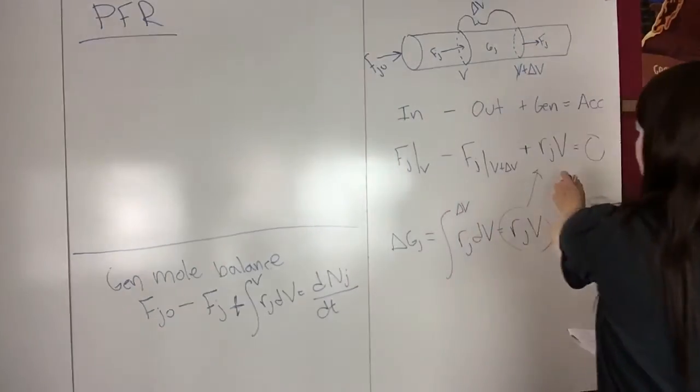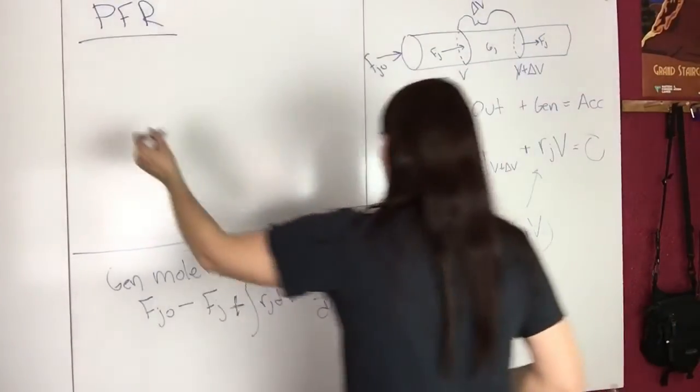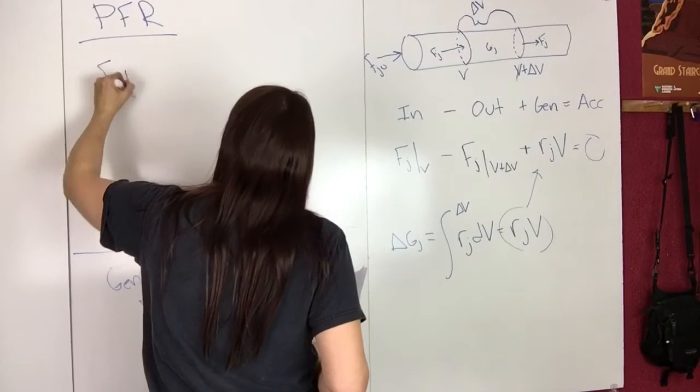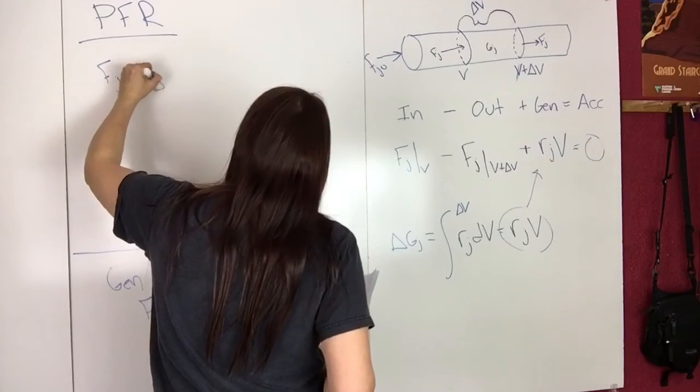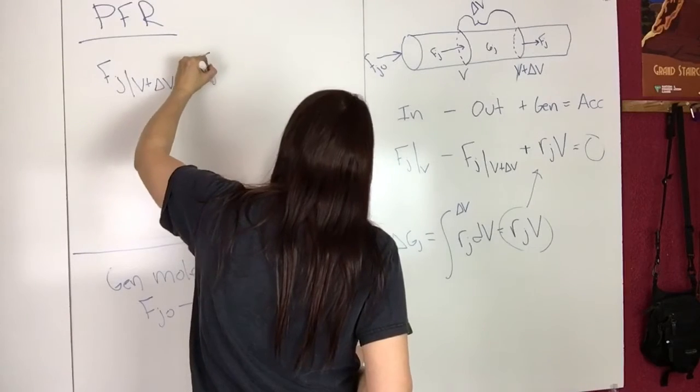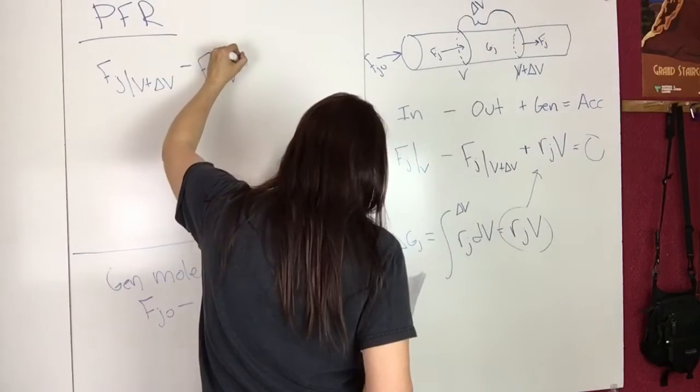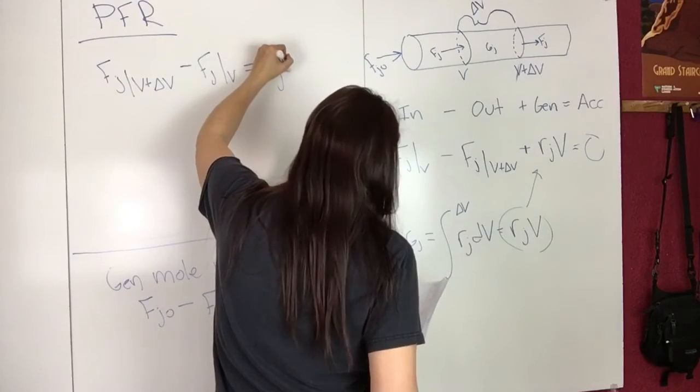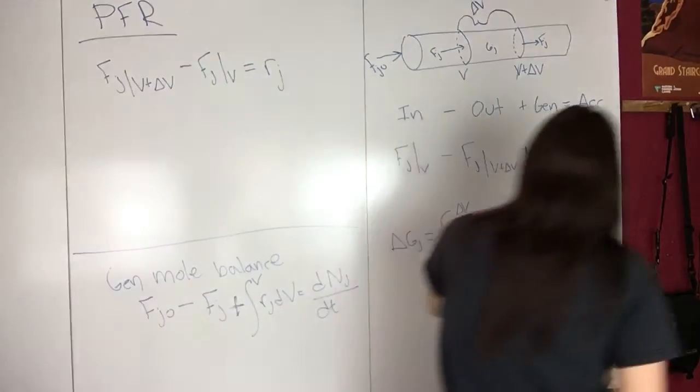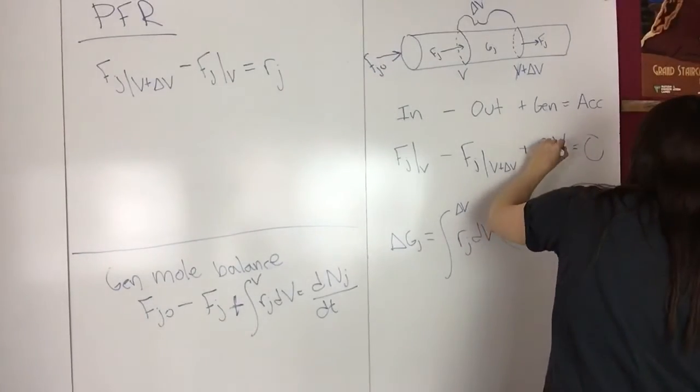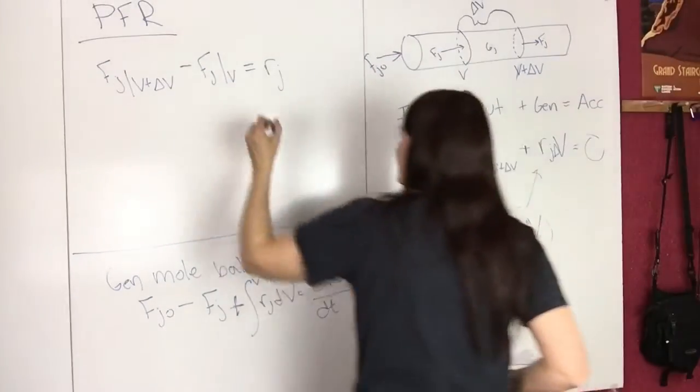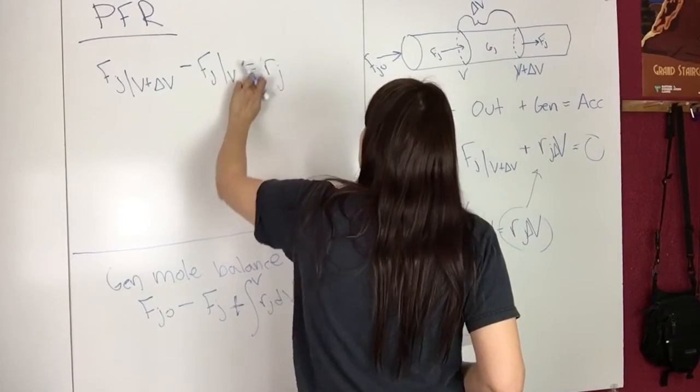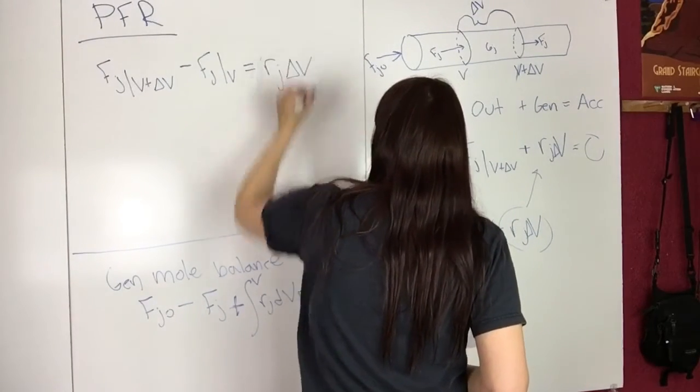If we take this equation and rearrange it, we can write F_J at V plus delta V minus F_J at V equals R_J delta V.